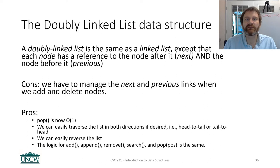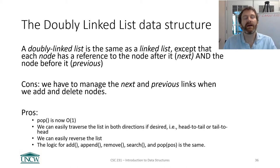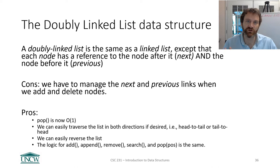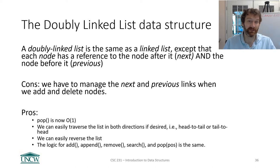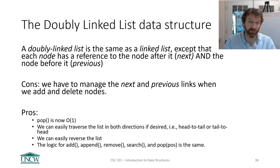What is it? Well, it's the same thing as a linked list except that each node in the list has a reference to the node after it — that's next, which was already there — and the node before it, and that's the previous node. So our original node class was just data and next. Now we've got data, next, and the previous node. The downside is that whenever we add or remove stuff from our list, we have to think about how to manage the previous link in the node class.